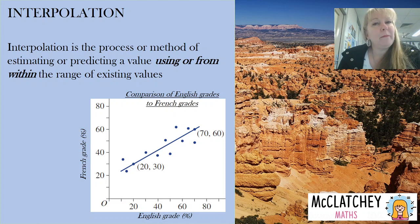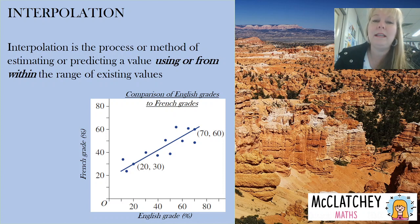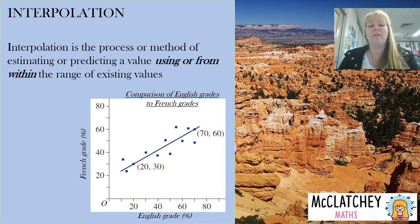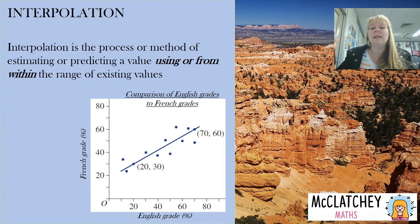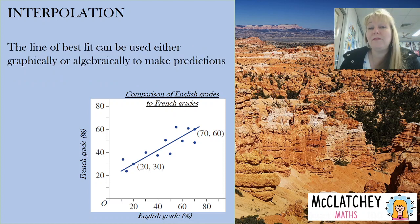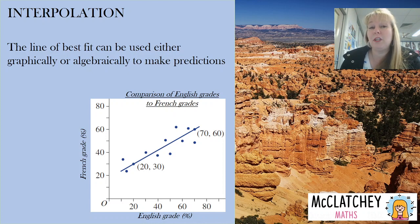Interpolation is the process of estimating or predicting a value from within the range of existing values. Your range consists of the points furthest to the left and furthest to the right on your scatter plot — anything beyond that is not interpolation. Our line of best fit can then be used in two ways: using the graph or using algebra to make predictions.